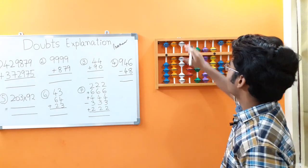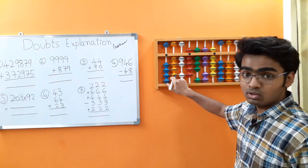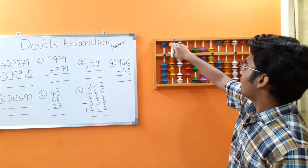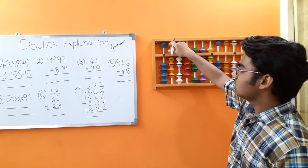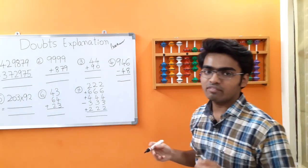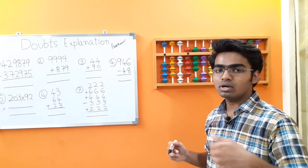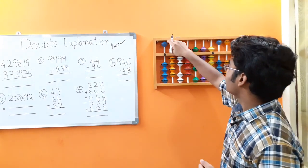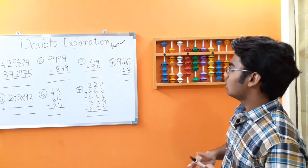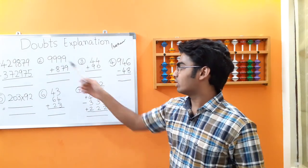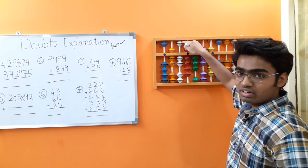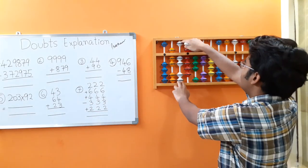First digit: 3. We do not have enough beads at the lower end, so make use of the small friends concept. As you know, in small friends, 3's friend is 2. Add the boss 5, less the friend 2. Next, 7 — we can add 7 directly because we have enough beads on this rod.